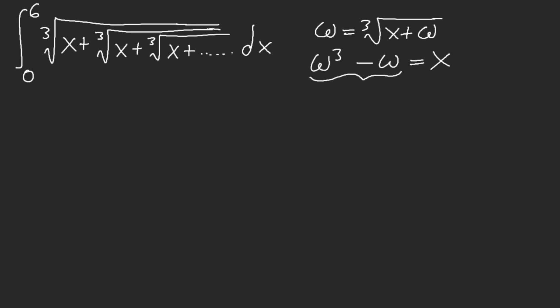Do you remember inverse jailbreaking? That's exactly what we're going to do. We have our original function and we're going to integrate the inverse — in this case, W cubed minus W. The most difficult part is: what's our bound? Starting with 6 as the upper bound: plugging in 6 means this equals 2, since 2 cubed minus 2 equals 6 — just by inspection.